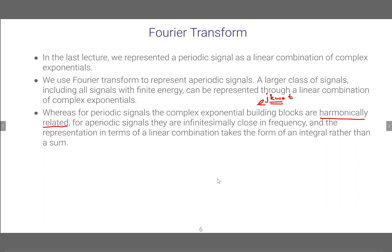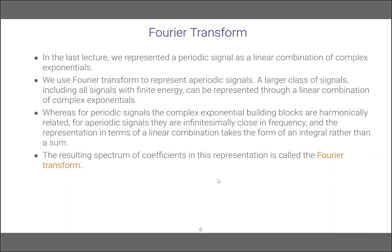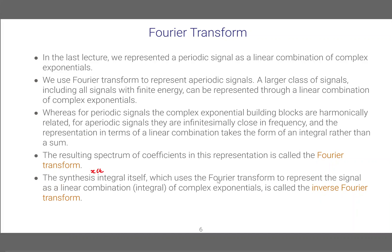For aperiodic signals, the building blocks are infinitesimally close in frequency. So the building block signal that we would use is e to the power of j·ω·t. You can think that ω is similar to k·ω₀. Also, in the Fourier series we had a summation for x(t), but in the Fourier transform we will have an integral rather than a summation, and we will see this relationship in detail. The resulting spectrum of the Fourier coefficients in this representation is called the Fourier transform.